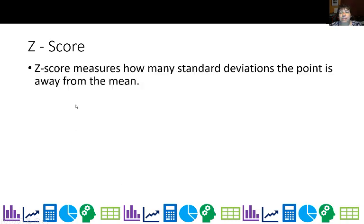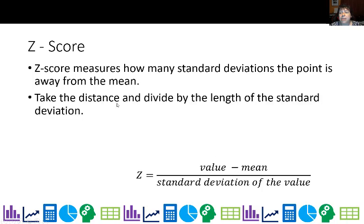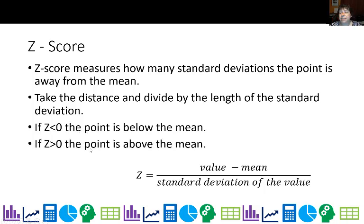Now we have, let's go back to, we're going to revisit the z-score. So first of all, it measures how many standard deviations the point is away from the mean. You take the distance. So it's the value minus the mean over the standard deviation of the value. Take the distance, which is the value minus the mean, and divide it by that standard deviation. If z is less than zero, the point is below the mean. If z is above zero, the point is above the mean.